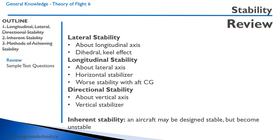Let's review. Lateral stability is around the longitudinal axis — we can have dihedral and keel effect to influence it. Longitudinal stability is around the lateral axis, with the horizontal stabilizer being the major design consideration. We have worse stability with an aft center of gravity. Directional stability is about the vertical axis, and the size of the vertical stabilizer is the primary design consideration. An aircraft may be designed to be stable but become unstable if not loaded properly — this is called inherent stability.